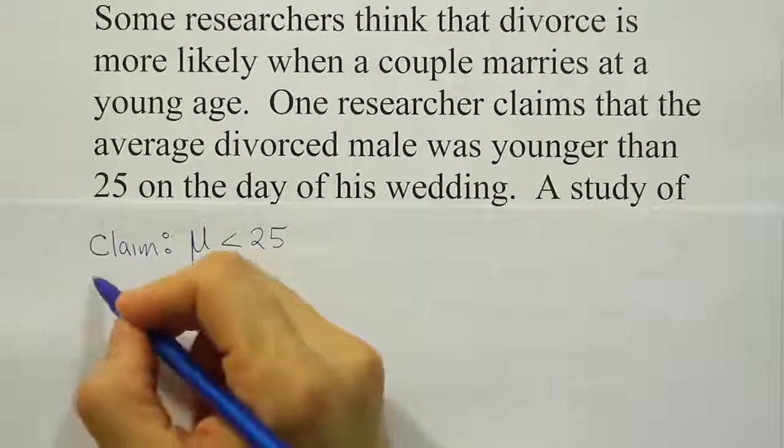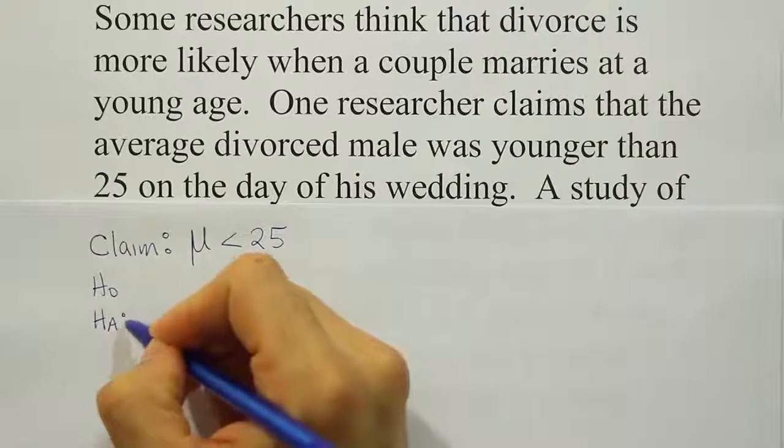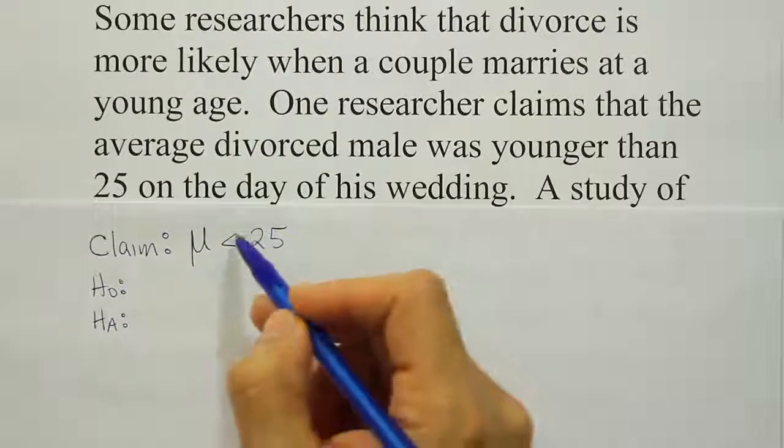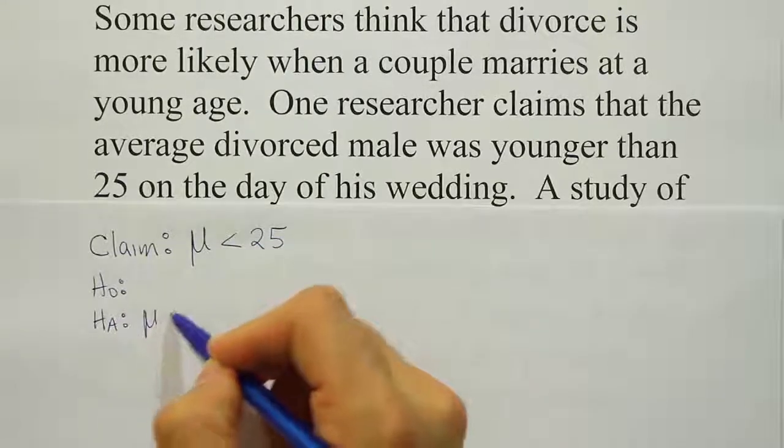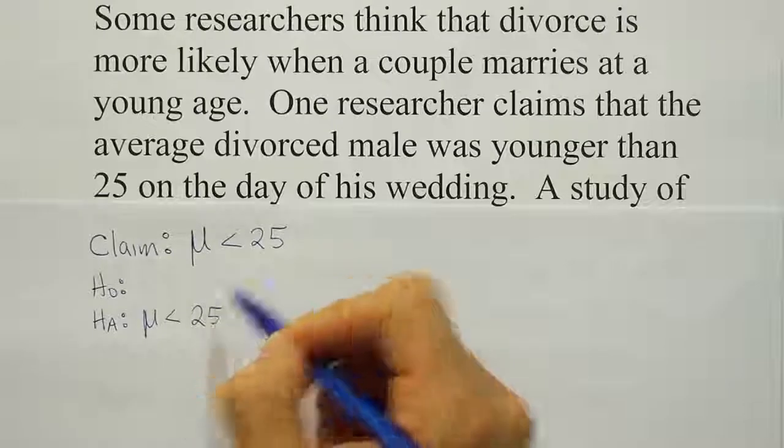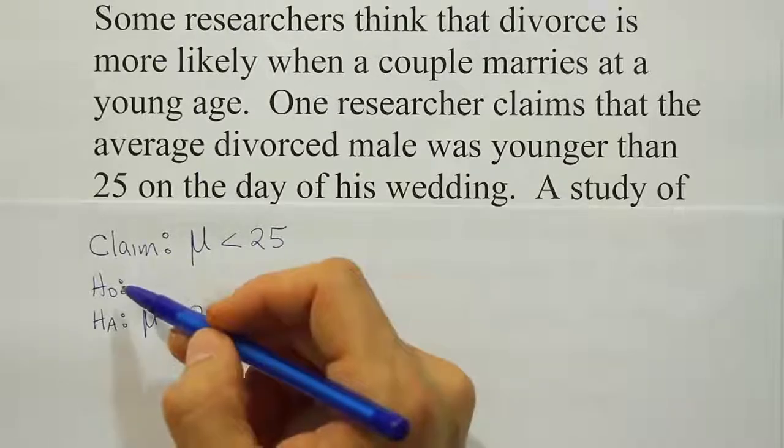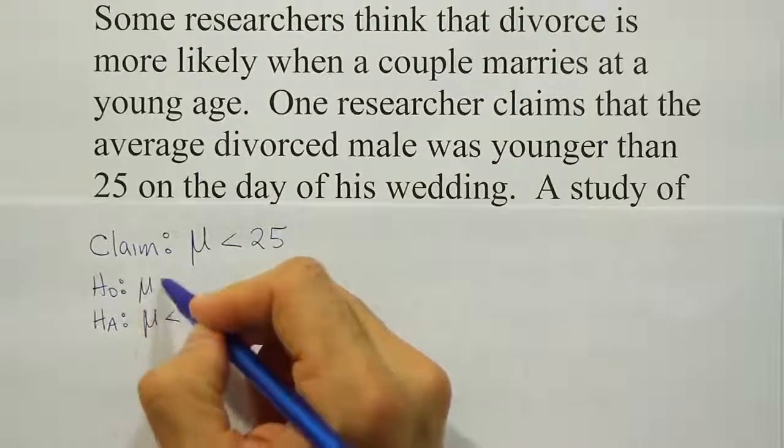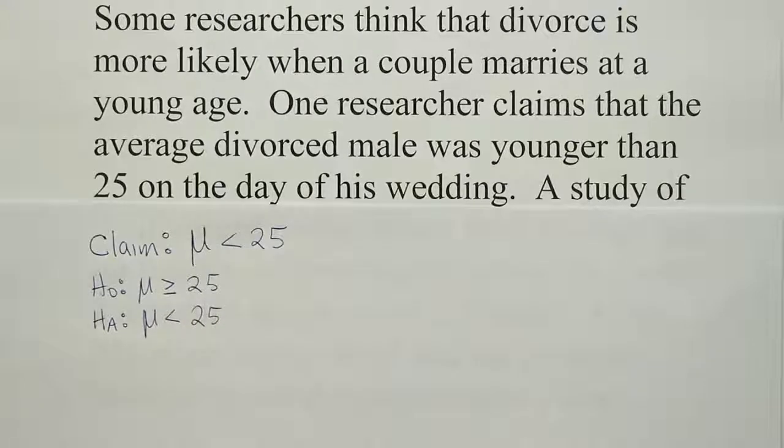Now H0 and HA goes underneath that. So if we look at the symbol in the claim, we'll recognize that the claim is the same as HA because it has a less than symbol, one of the symbols we use in HA. And H0 will be greater than or equal to 25. So the opposite of less than.